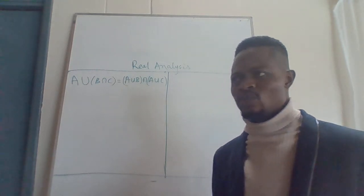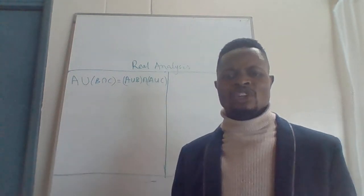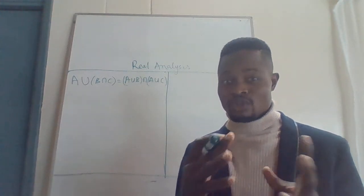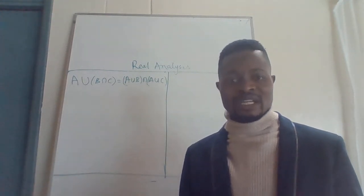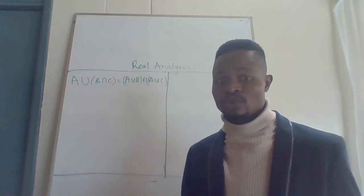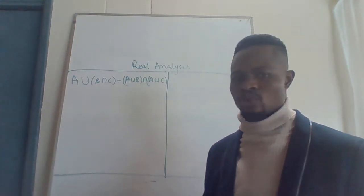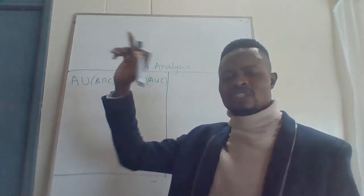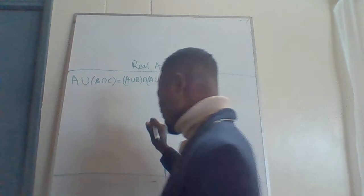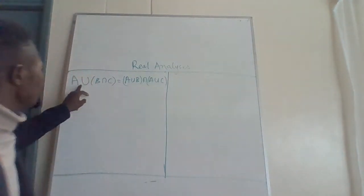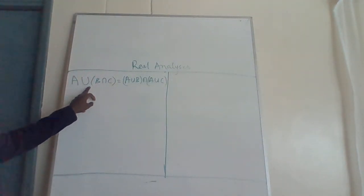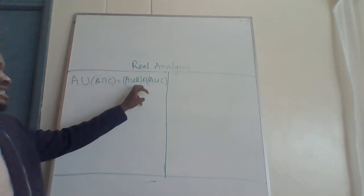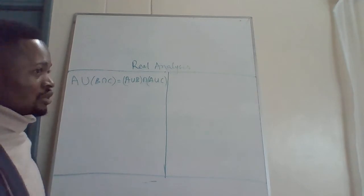I decided to make this video physically in order to explain how this thing comes about. Otherwise I could have used software to teach this unit. But I want to take you through this pure mathematics and we will be proving some formulas. The equation here is that we prove that A union (B intersection C) is equal to (A union B) intersection (A union C).